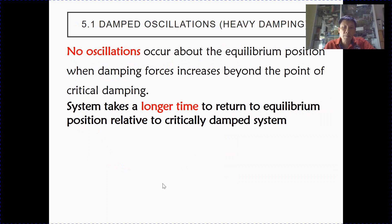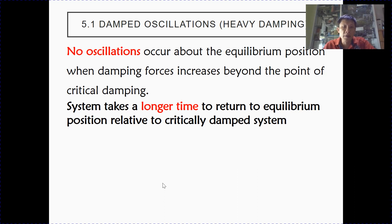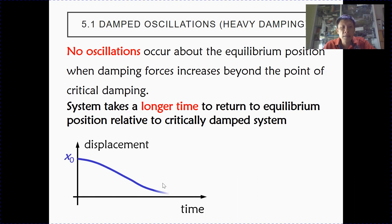The third degree of damping is heavy damping. Again, no oscillations occur — only for light damping is there oscillation. For critical and heavy damping, there's no oscillation. Heavy damping is when the degree of damping is more than that of critical damping, so that the system takes a longer time compared with a critically damped system to return to the equilibrium position.